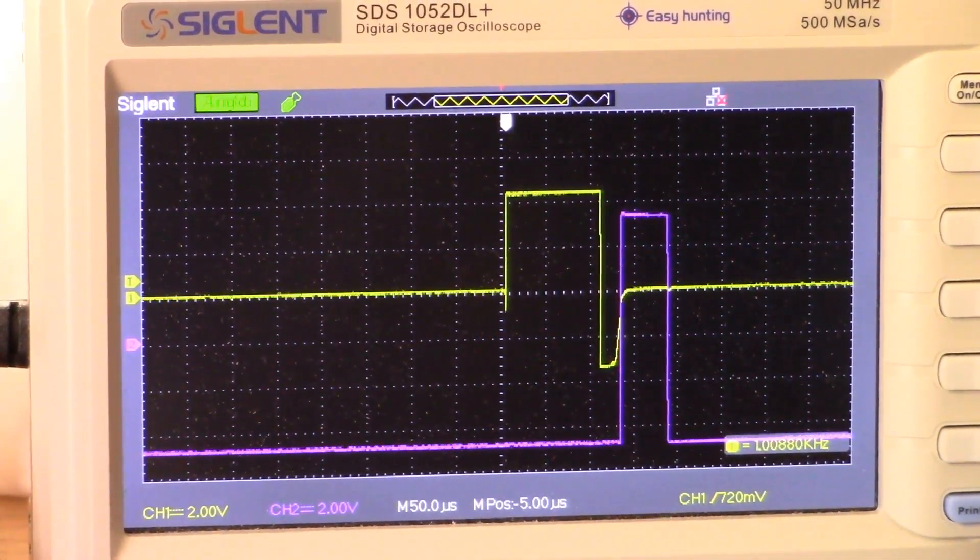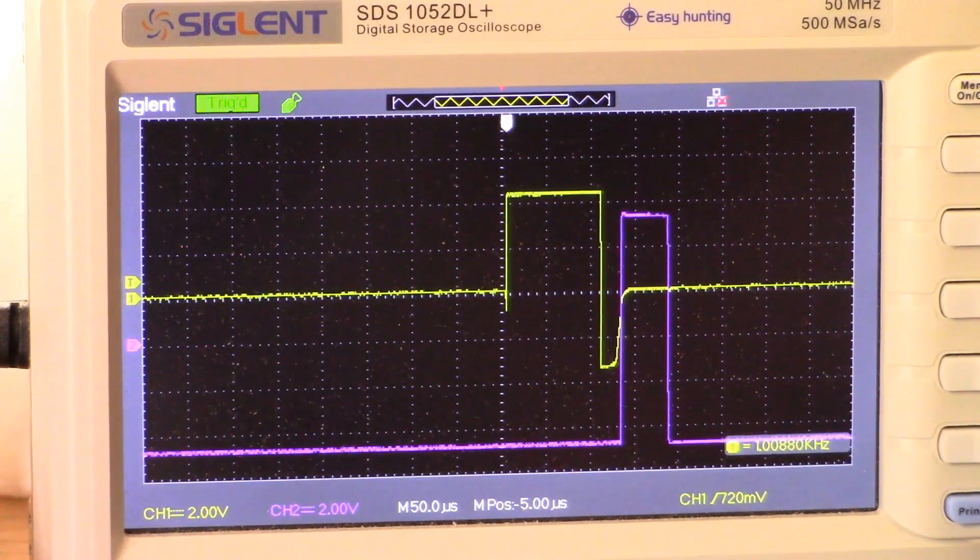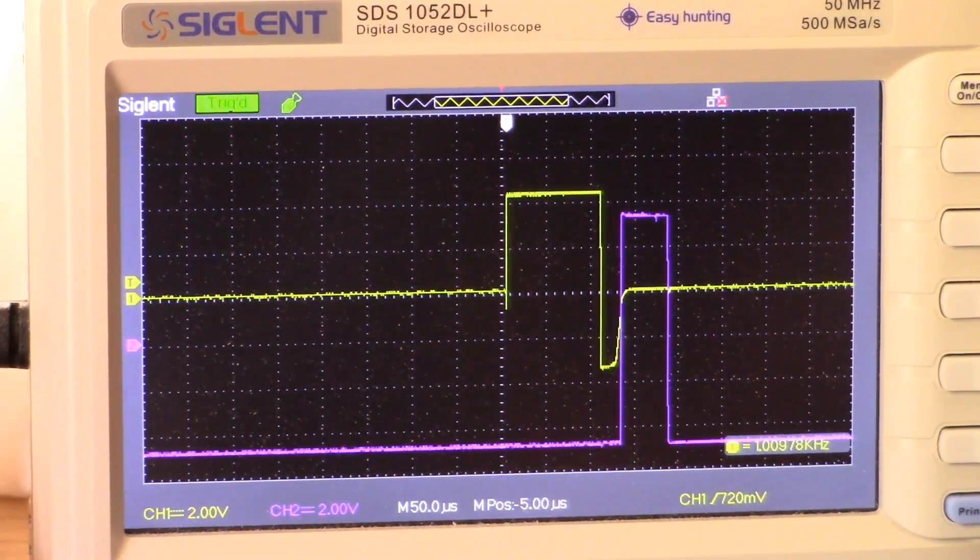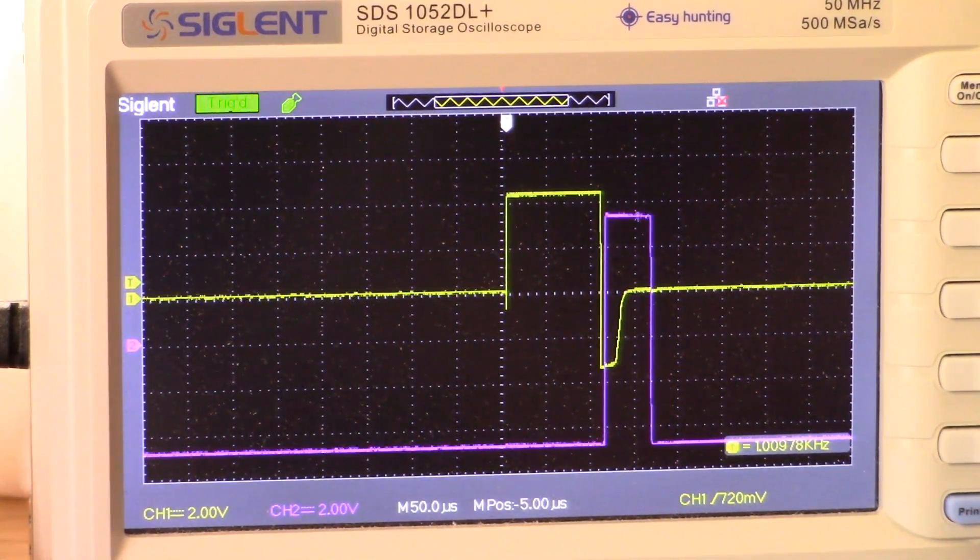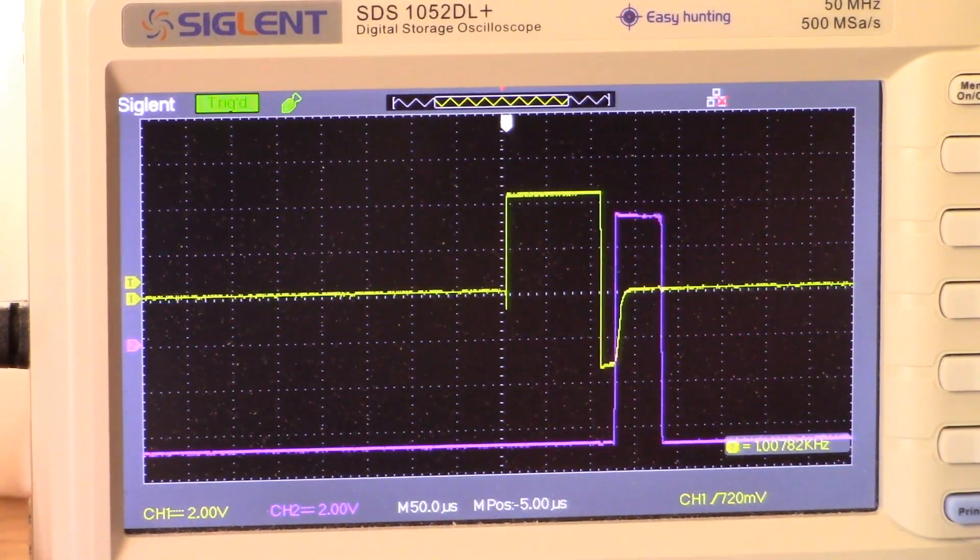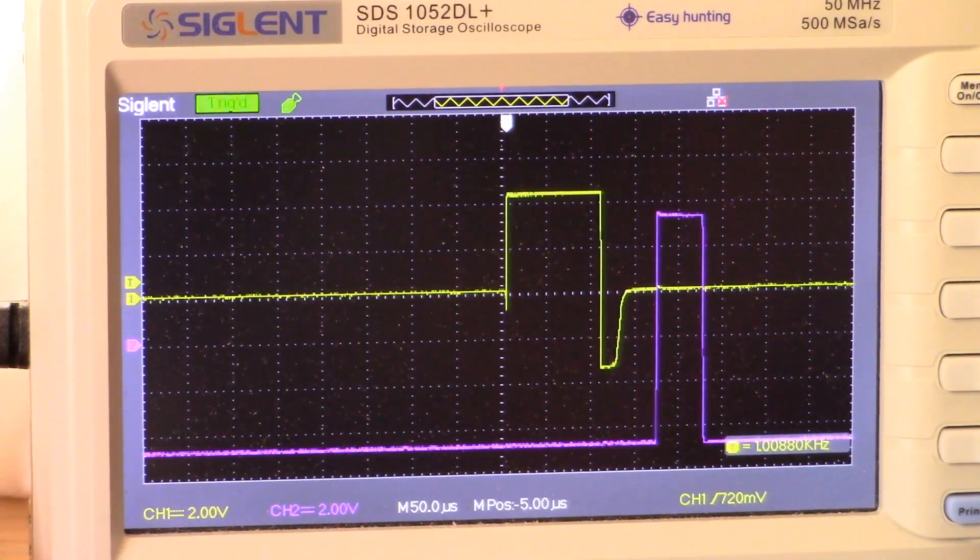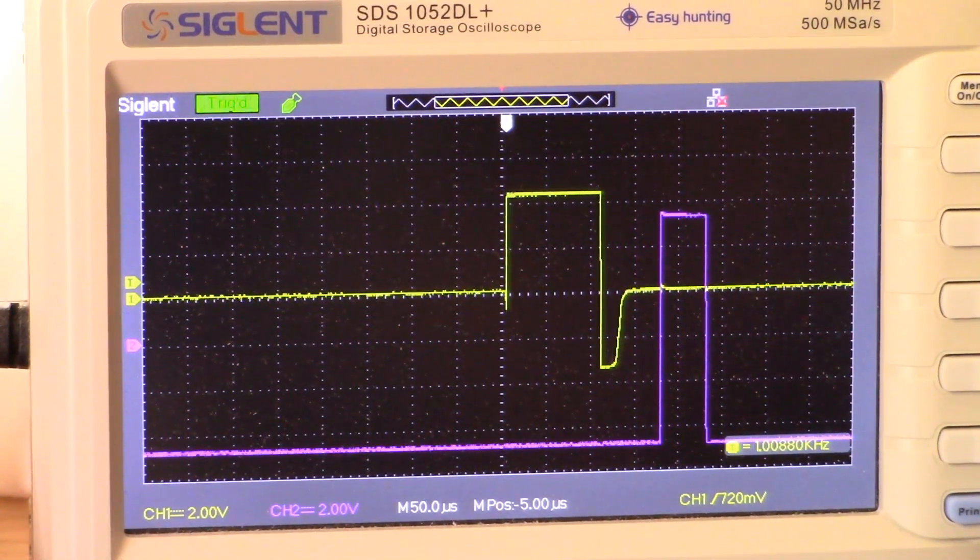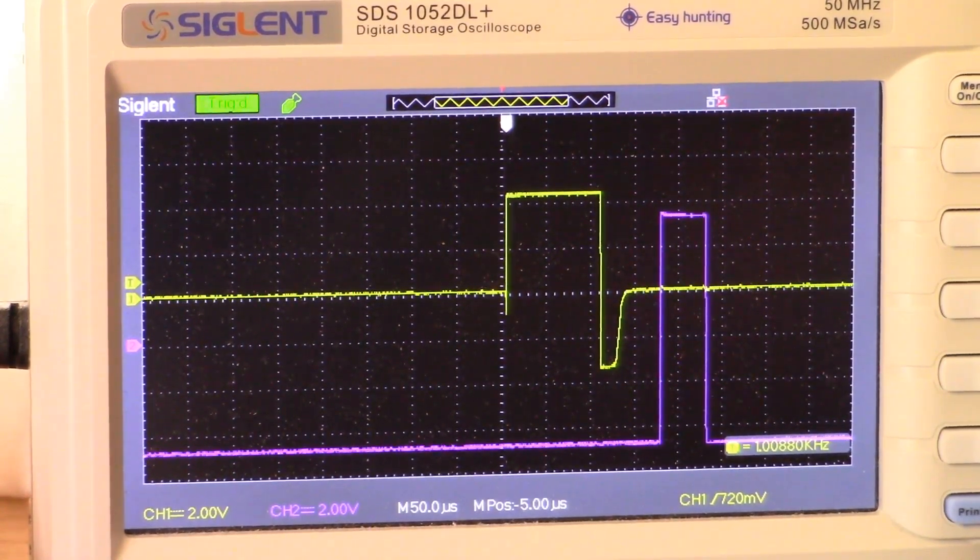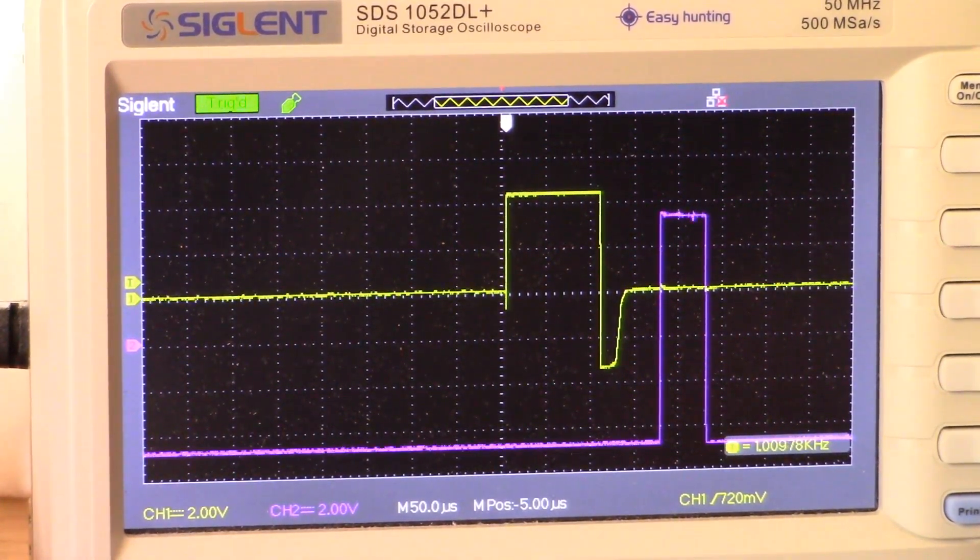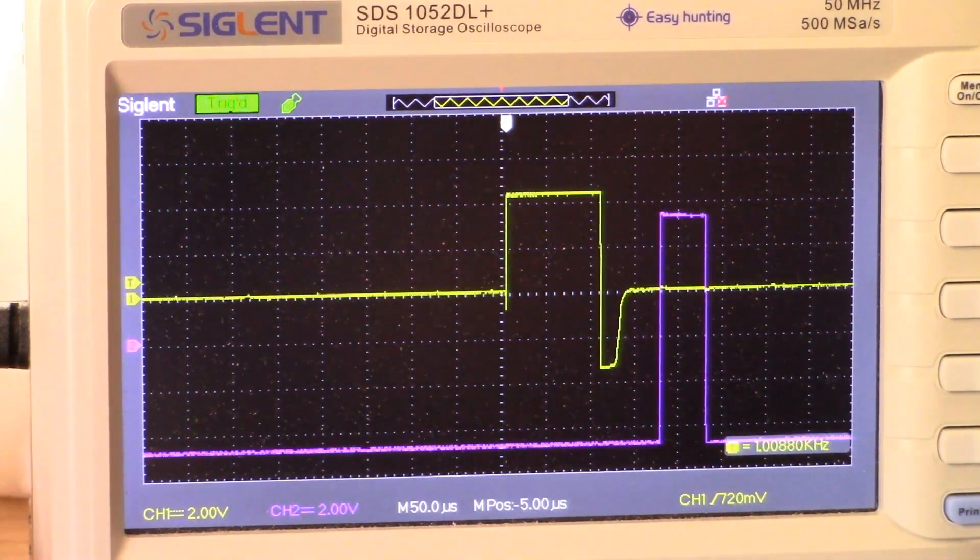I am going to adjust the delay potentiometer. There it is at minimum, and we'll move it out to maximum. There we have it. You can see that we are at 50 microseconds.